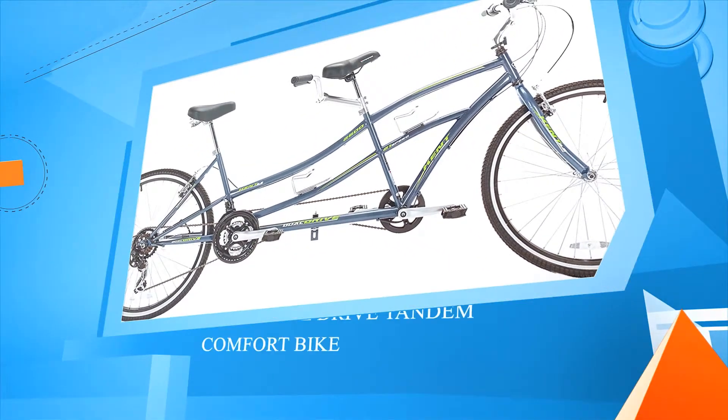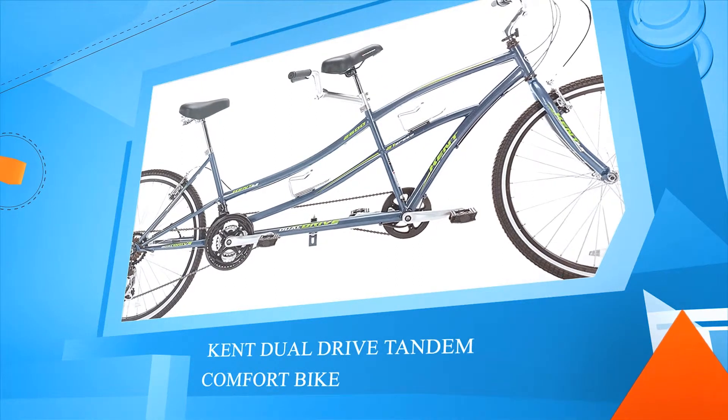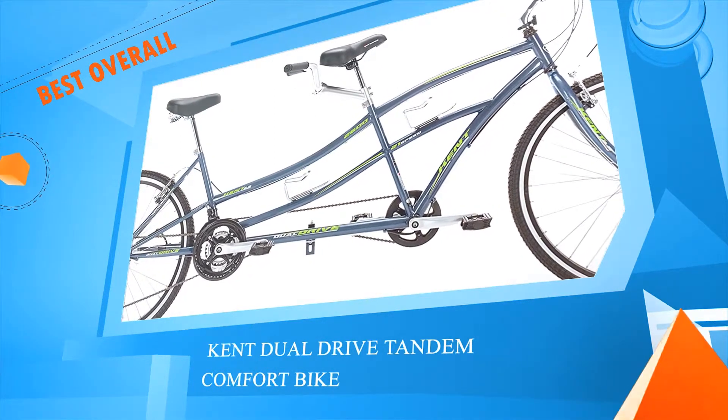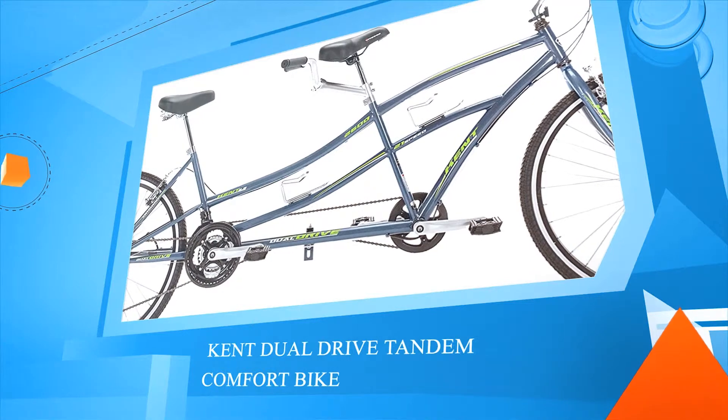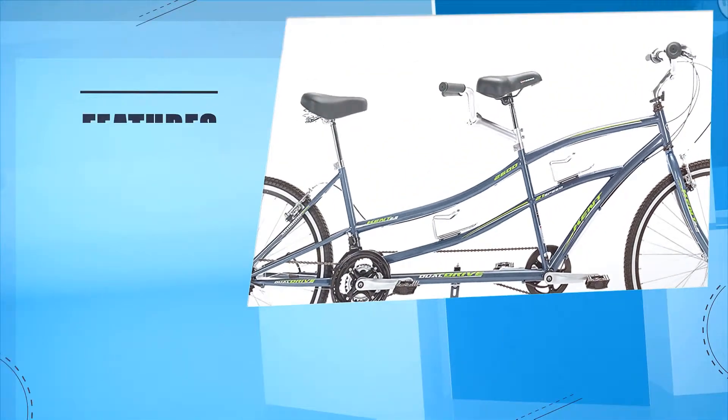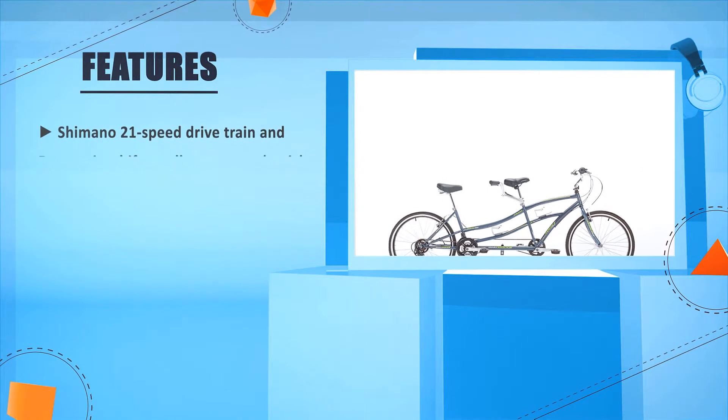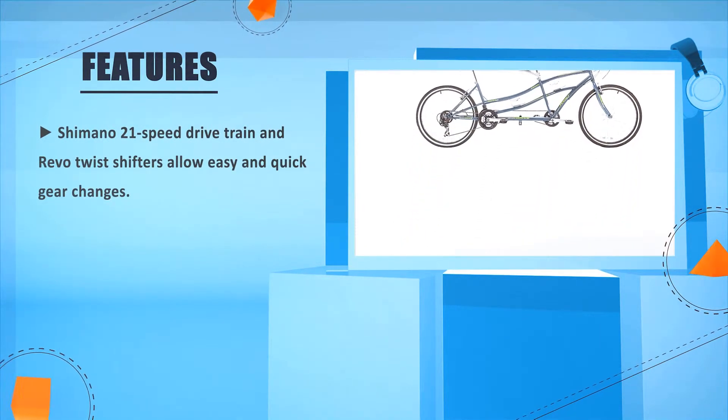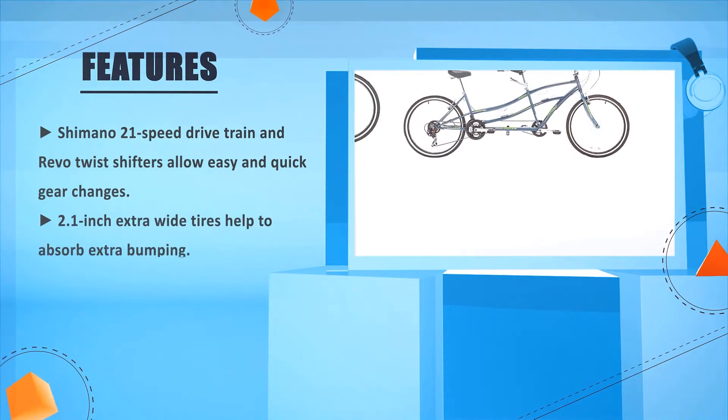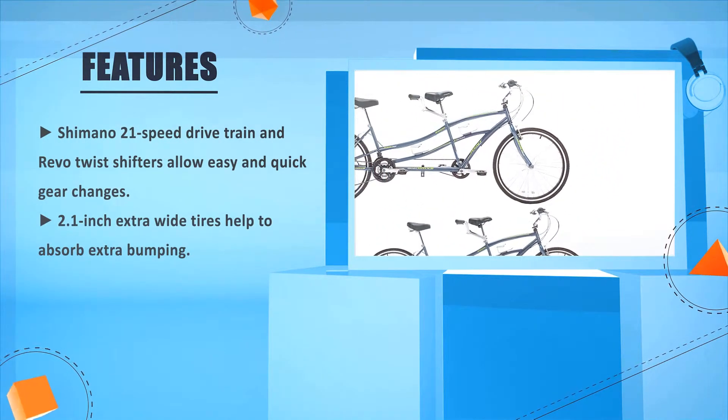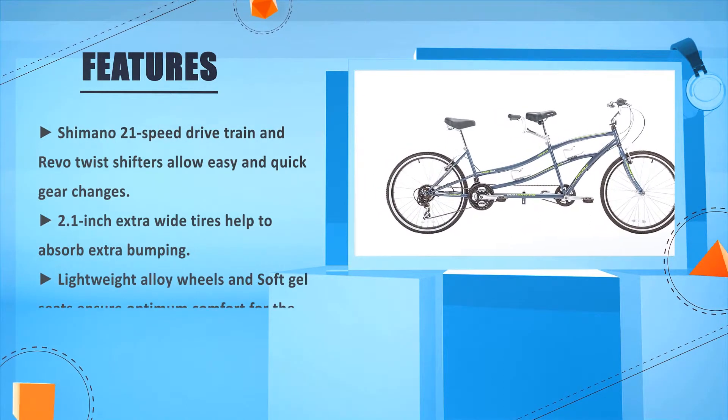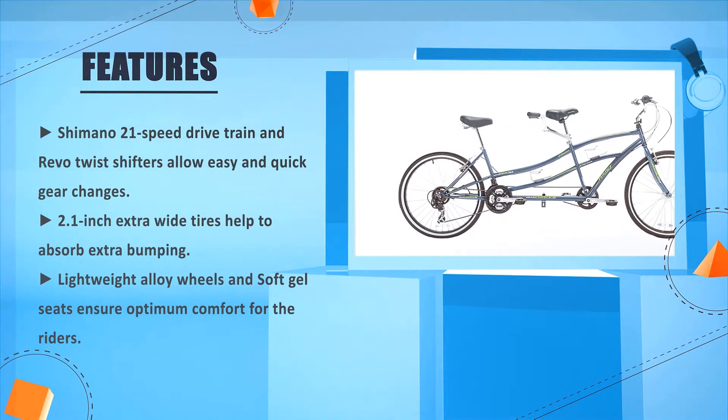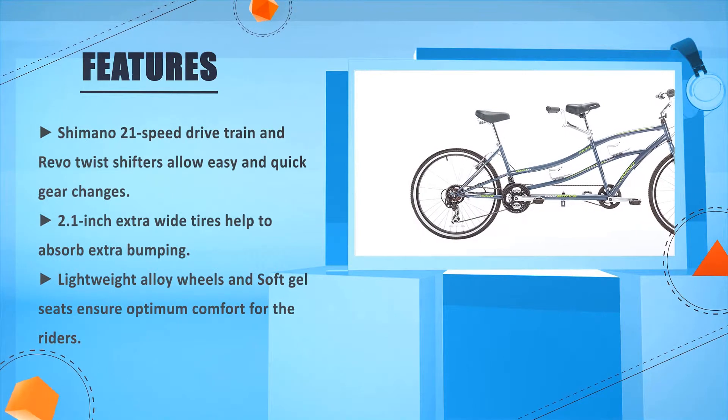Number one: Kent Dual Drive Tandem Comfort Bike. Shimano 21-speed drivetrain and Revo twist shifters allow easy and quick gear changes. 2.1 inch extra wide tires help to absorb extra bumping. Lightweight alloy wheels and soft gel seats ensure optimum comfort for the riders.